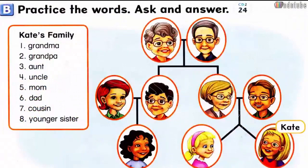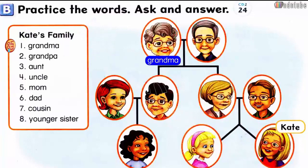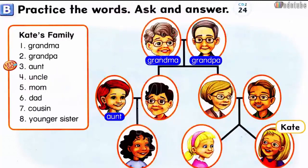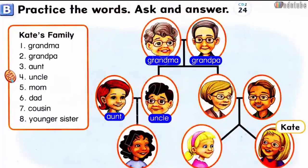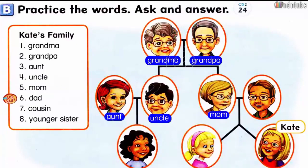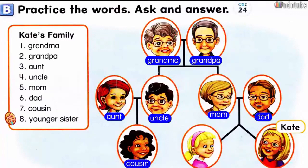Page 49. B: Practice the words. Kate's family. Number 1: Grandma. Number 2: Grandpa. Number 3: Aunt. Number 4: Uncle. Number 5: Mom. Number 6: Dad. Number 7: Cousin. Number 8: Younger sister.